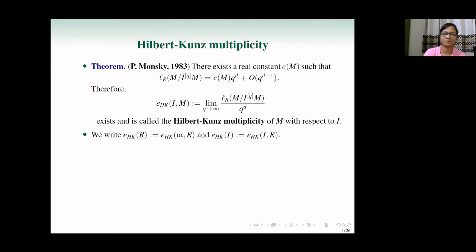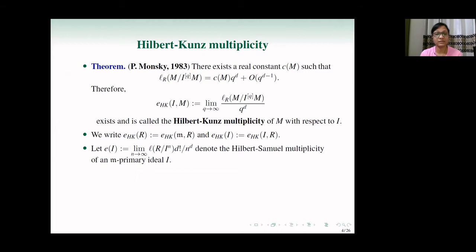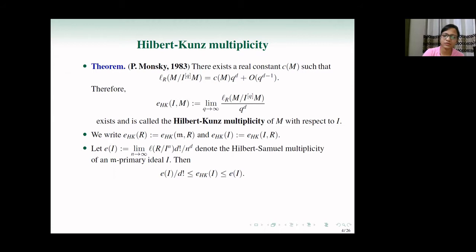Since the Hilbert-Kunz multiplicity is an asymptotic limit, we can compare it to the Hilbert-Samuel multiplicity, which is the limit of length of R over I^n times d! over n^d. Indeed, the Hilbert-Kunz multiplicity of an m-primary ideal I is sandwiched between the Hilbert-Samuel multiplicity divided by d! and the Hilbert-Samuel multiplicity itself. As an easy consequence, if the dimension of the ring is 1, these two numbers coincide. But in higher dimensions, we can have strict inequality.